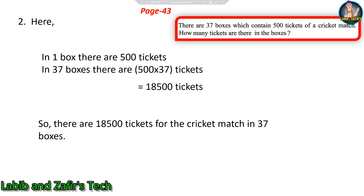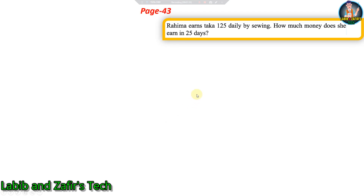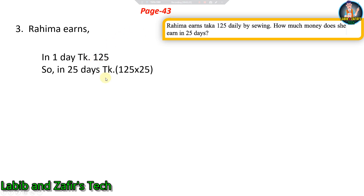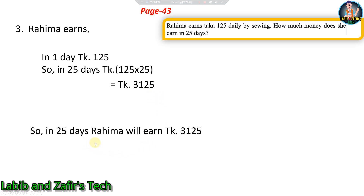Our third word problem from page 43: Rohima earns taka 125 daily, how much money does she earn in 25 days? In one day Rohima earns 125 taka, so we have to multiply 125 by 25. Rohima earns in one day taka 125, so in 25 days: 125 into 25 is equal to taka 3,125. So in 25 days Rohima will earn 3,125 taka.